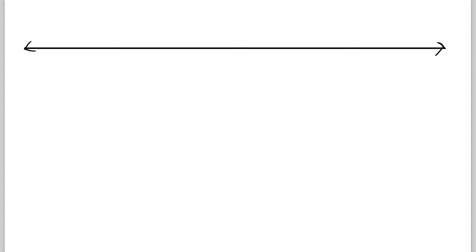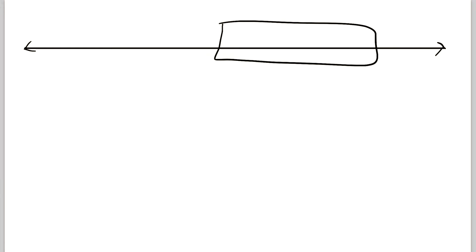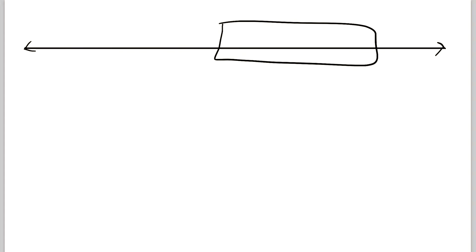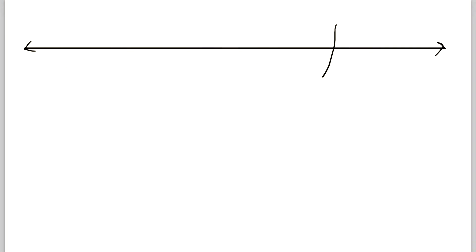We'll start off with the real number line, and of course on this line are all of the real numbers. Interval notation gives us an easy way of representing any slice of this line. It could be one slice, it could be a combination of slices, or it could even be an infinite slice that continues infinitely.